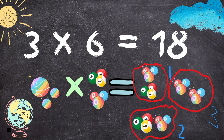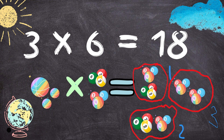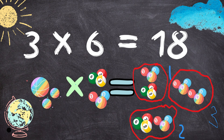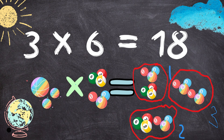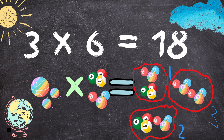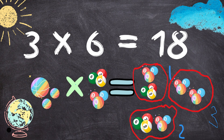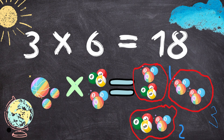Three carats multiplied by six balls equals to eighteen. Three times six equals to twelve.